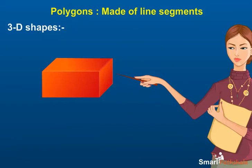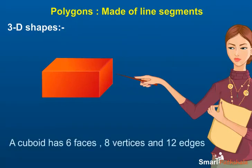Faces, edges, and vertices of a cuboid: a cuboid has six faces, eight vertices, and twelve edges.